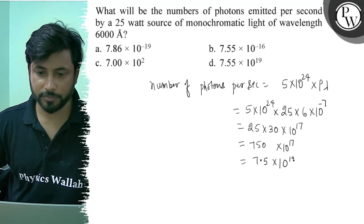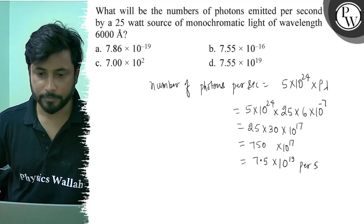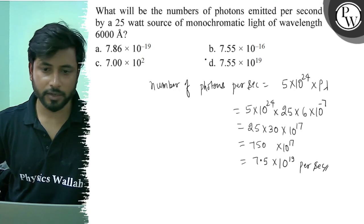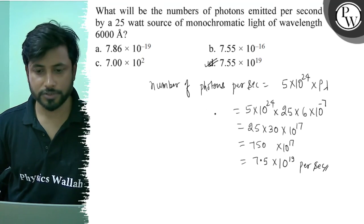This will be 7.5 into 10 to the power 19 per second. The answer is option D. Final answer is option D. Best of luck.